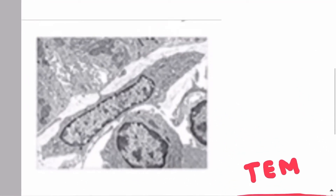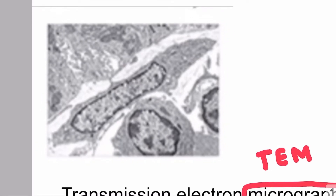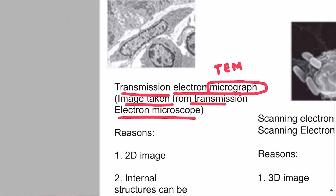How do you know that an image is taken from the transmission electron microscope? It's very simple. There are two identification factors. Whenever there is a 2D image, it means that the image is taken from the transmission electron microscope.